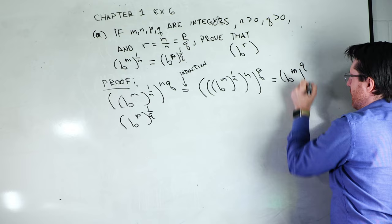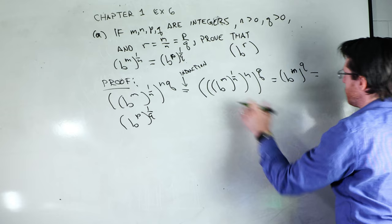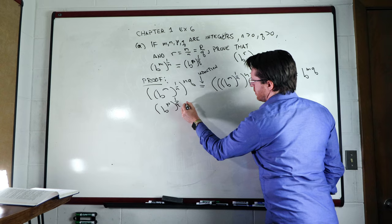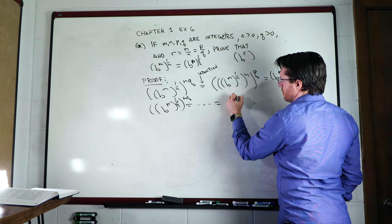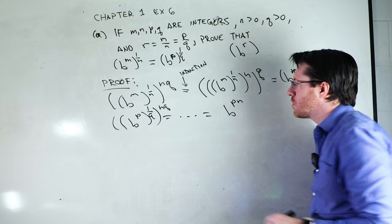And by the exact same reason we can do this, we can work it backwards, that gives us B to the M times Q. This guy is exactly the same, and if I raise this to the NQth power, we're gonna end up getting B raised to the P Nth power. So these do look like two different numbers, but I'm gonna show you that they're actually the same.